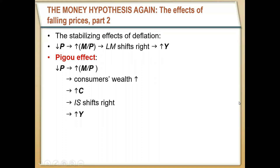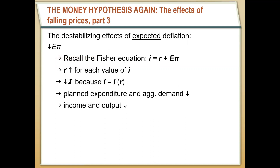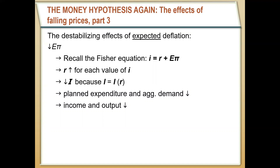But deflation can also have fairly significant destabilizing effects. If deflation is expected — if people know that prices are going to fall — they're going to factor that into interest rates. If expected inflation E-pi is negative, the Fisher equation tells us that nominal interest rates I equal real interest rates R plus expected inflation E-pi. If nominal interest rates don't change but E-pi falls, then the real interest rate R has to increase. So for each value of nominal interest rates, because of expected deflation, the real interest rate was higher. Since investment is a function of the real interest rate, as it becomes costlier to invest, people invest less. That decreases planned expenditure and aggregate demand, all from expected deflation, causing a fall in GDP.